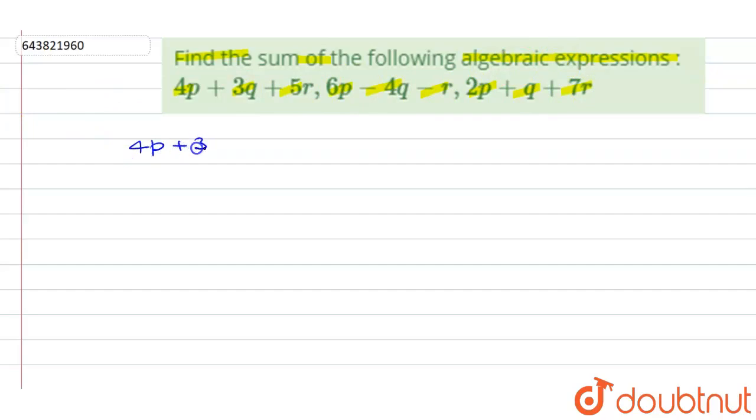So, 4p plus 3q plus 5r plus 6p minus 4q minus r plus 2p plus q plus 7r. So first we will open the bracket. So it will become 4p plus 3q plus 5r plus 6p, plus has no effect inside the bracket, all the signs will be same here.